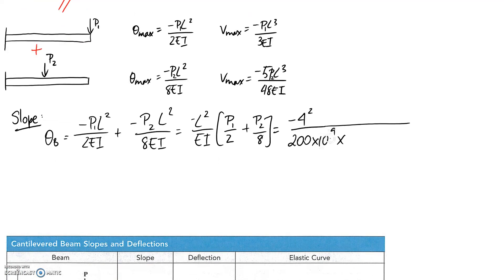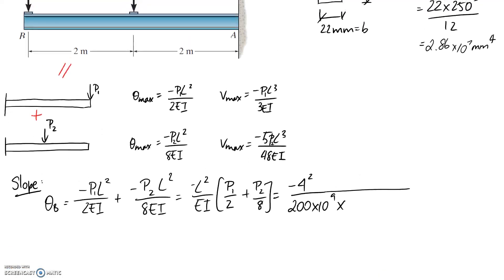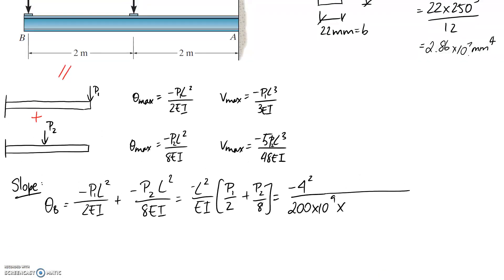Putting it in base units, it's 10 to the 9. I is the second moment of area that we just calculated up here, of 2.86 by 10 to the 7. Again converting it into base units, it's 10 to the negative 3 to go from millimeters to meters, and then since the unit is raised to the power of 4, our conversion is also raised to the power of 4.